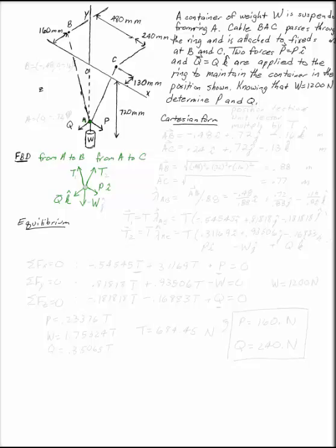What we're looking for is P and Q. W is in the negative j direction. P and Q are given in their directions and we have directions on our other two forces. That's the free body diagram.